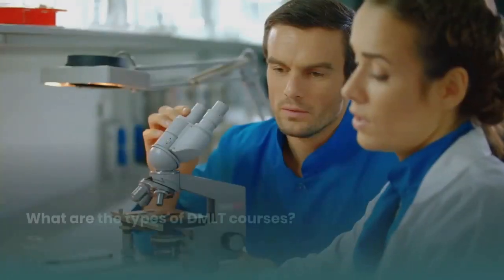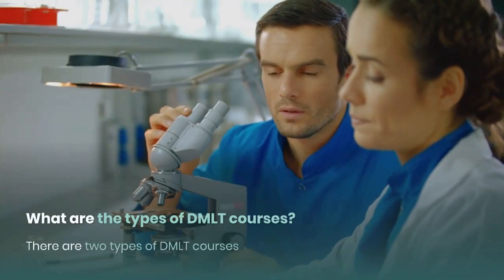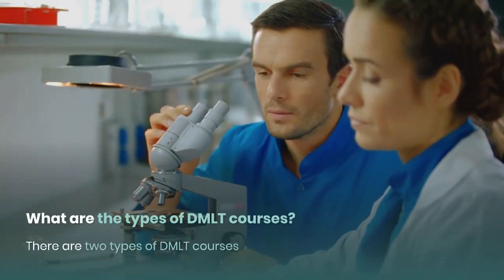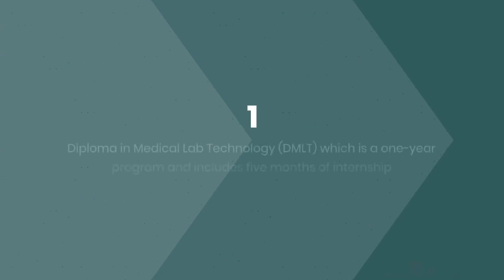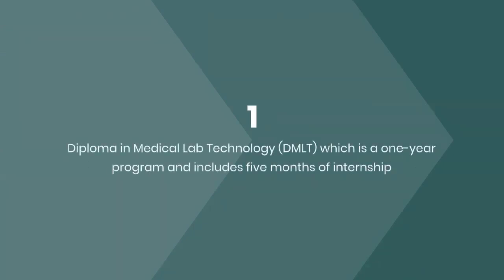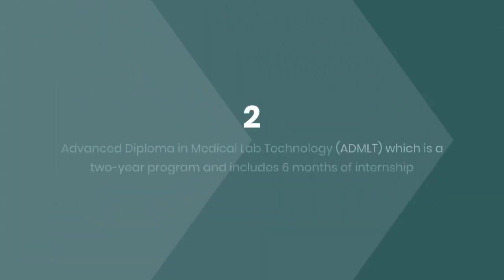What are the types of DMLT courses? There are two types of DMLT courses. 1. Diploma in Medical Lab Technology (DMLT), which is a one-year program and includes five months of internship. 2. Advanced Diploma in Medical Lab Technology (ADMLT), which is a two-year program and includes six months of internship.